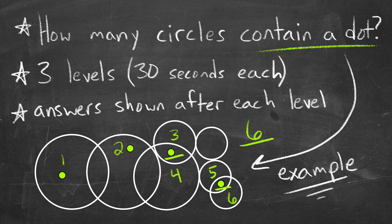Now, there are going to be three levels that get harder as we move through. Each level is 30 seconds, but feel free to pause if you need to before the answer is shown. Answers will be shown once that 30 seconds is up. More detailed explanations will be shown at the end where all of the circles will be pointed out. But at this point, I'll stop talking. Let's see how many you can get. Here we go.